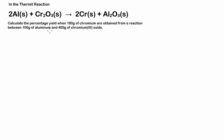Calculate the percentage yield when 180 grams of chromium are obtained from a reaction between 100 grams of aluminum and 400 grams of chromium oxide. The first thing I'm going to do here is work out the number of moles from these given masses. I'll also check if there's a limiting factor when I work this out.